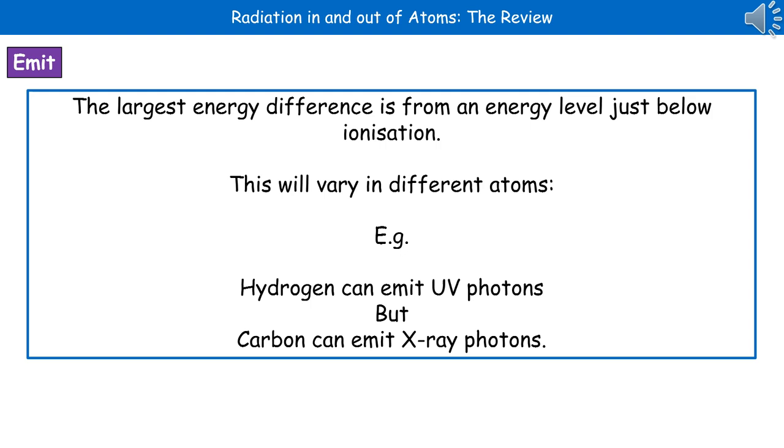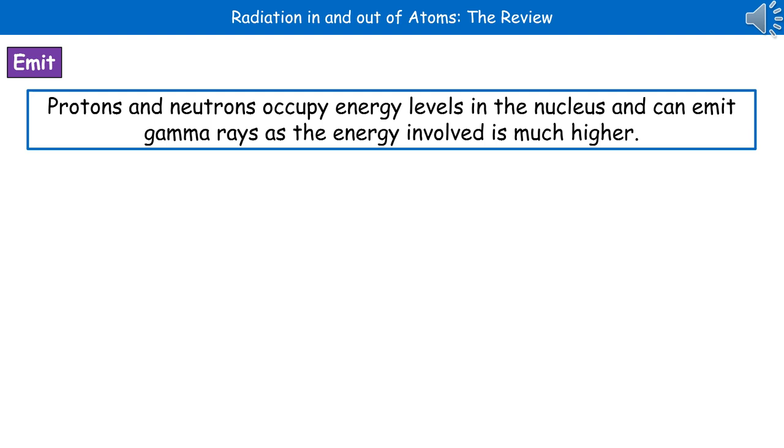Hydrogen, for example, can emit ultraviolet photons, but carbon can emit X-ray photons. So there are different frequencies there as a result of the difference in the energy difference.